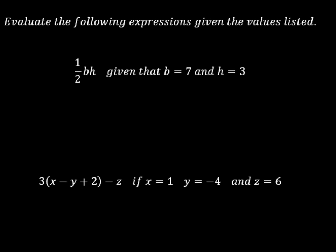Okay, so these two problems ask us to evaluate the following expressions given the values listed. If we take a look at this first one, we have 1/2 bh. Remember, when these two letters are written next to each other, we're going to assume that's multiplication. And it tells us that b is equal to 7 and h is equal to 3.